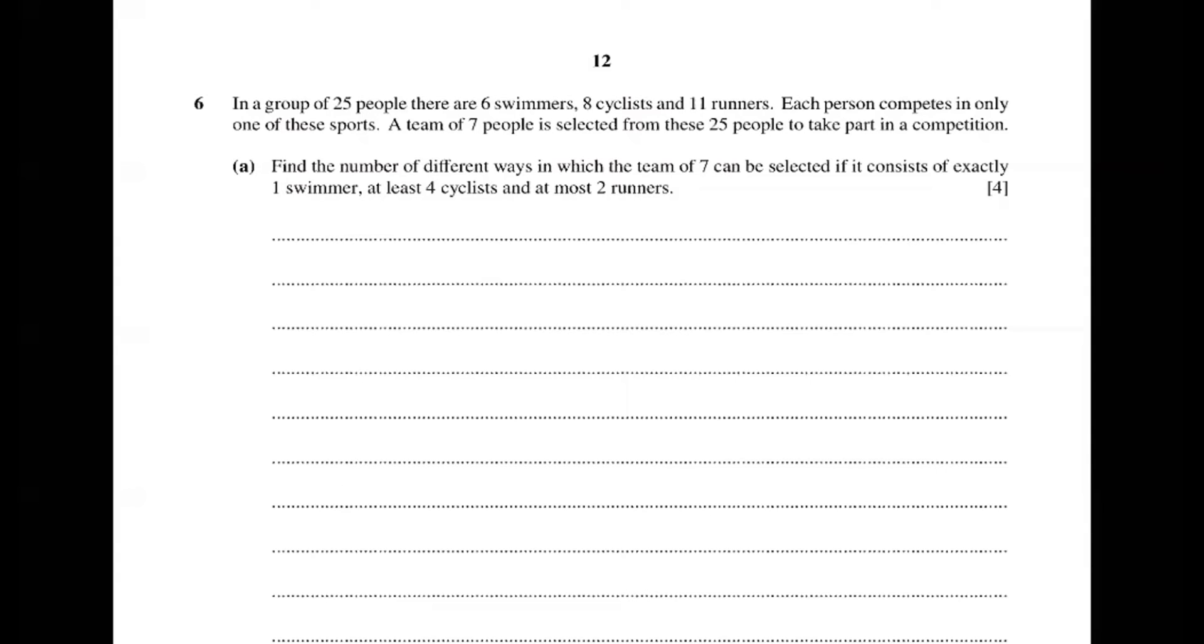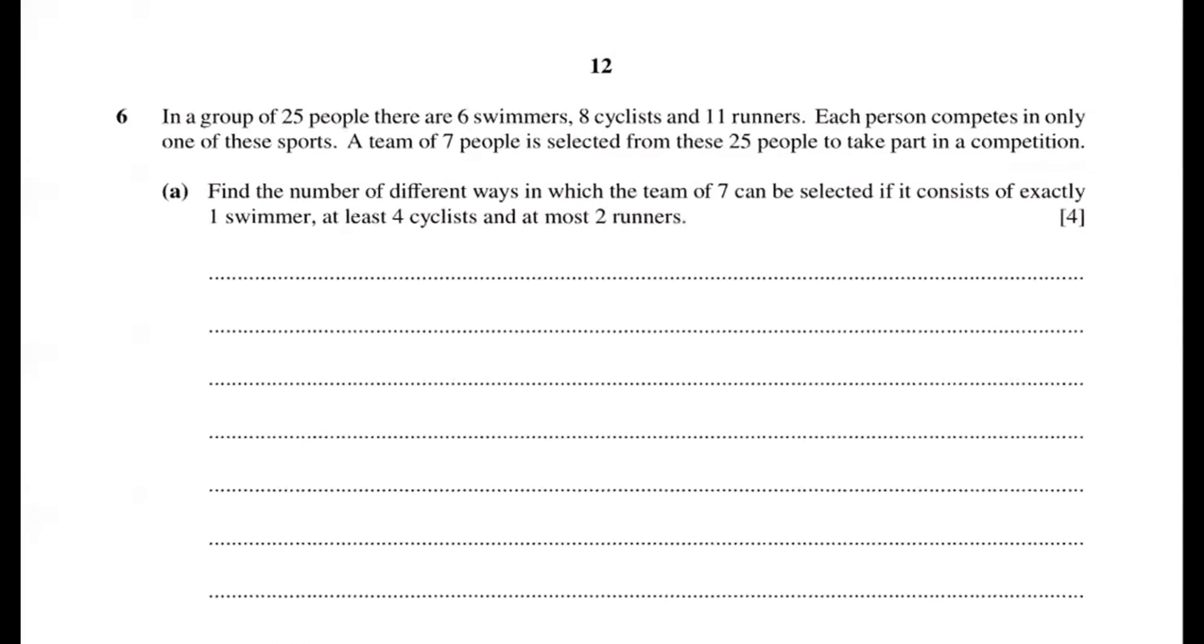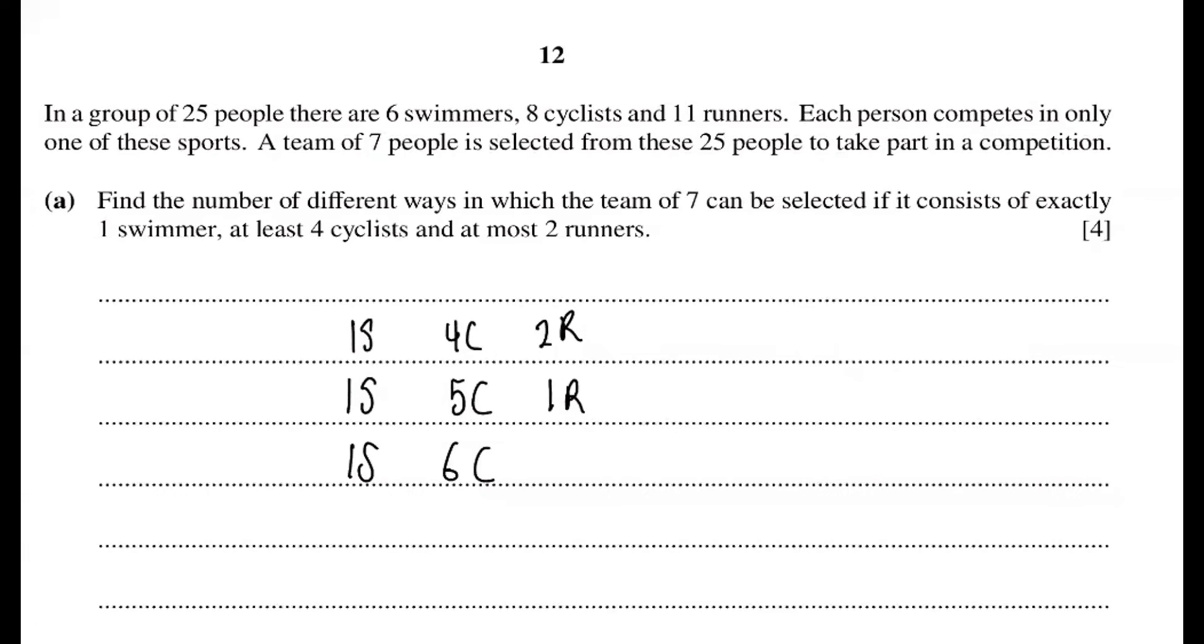Alright, for this question, they say that they have 1 swimmer and execute 4 cyclists and at most 2 runners. So that means it can be 1 swimmer and then 4 cyclists, 7 people, and then 2 runners. It can also be 1 swimmer, 5 cyclists and then 1 runner. It also can be 1 swimmer, 6 cyclists. Because it's at most 2 runners, it means it can be 0 runners also.